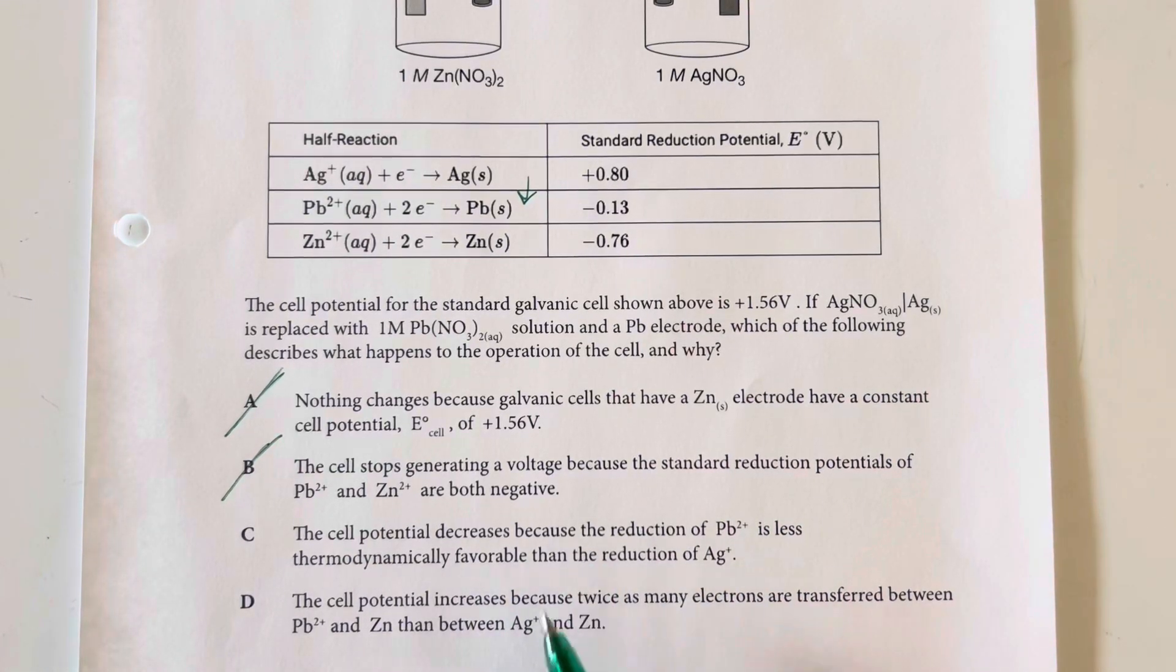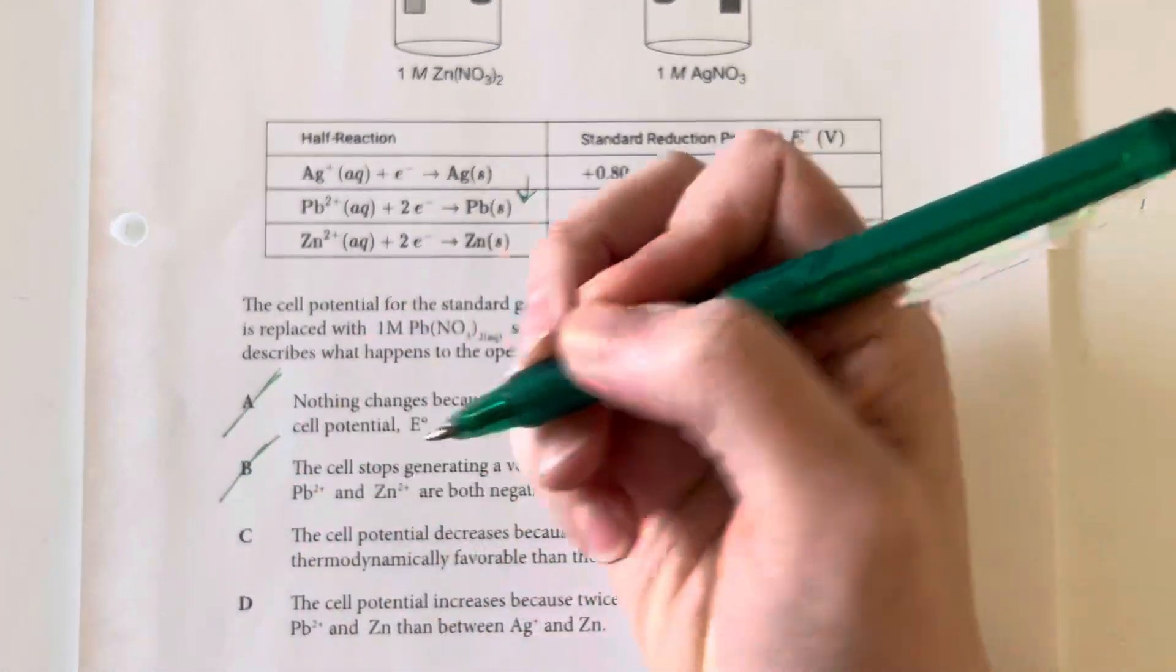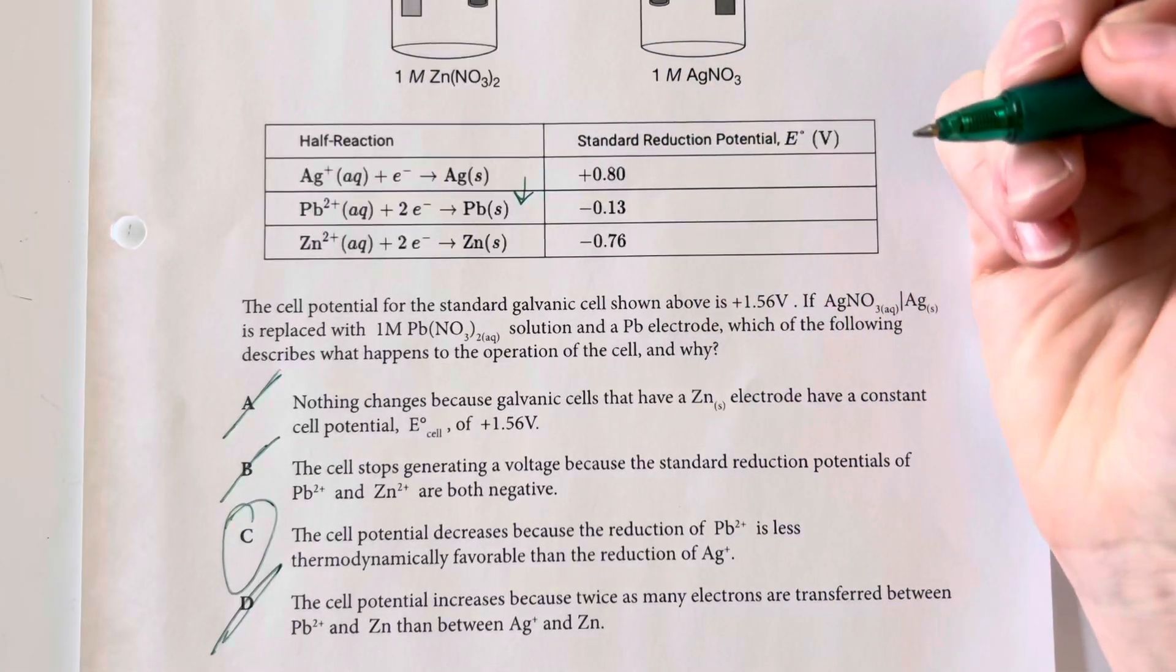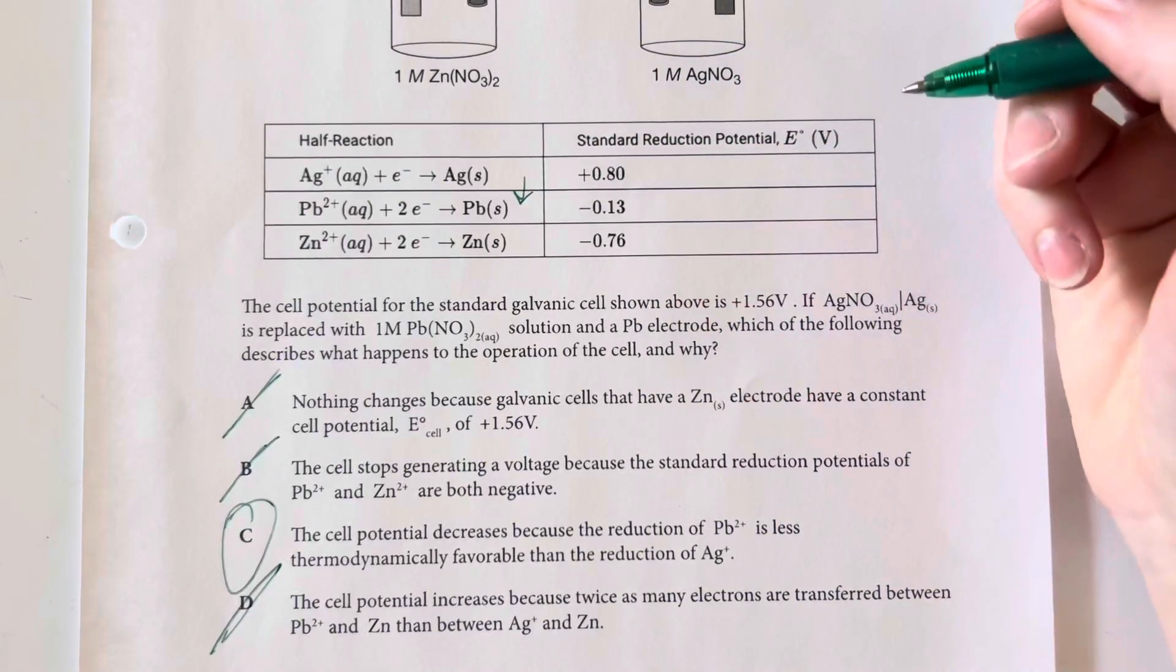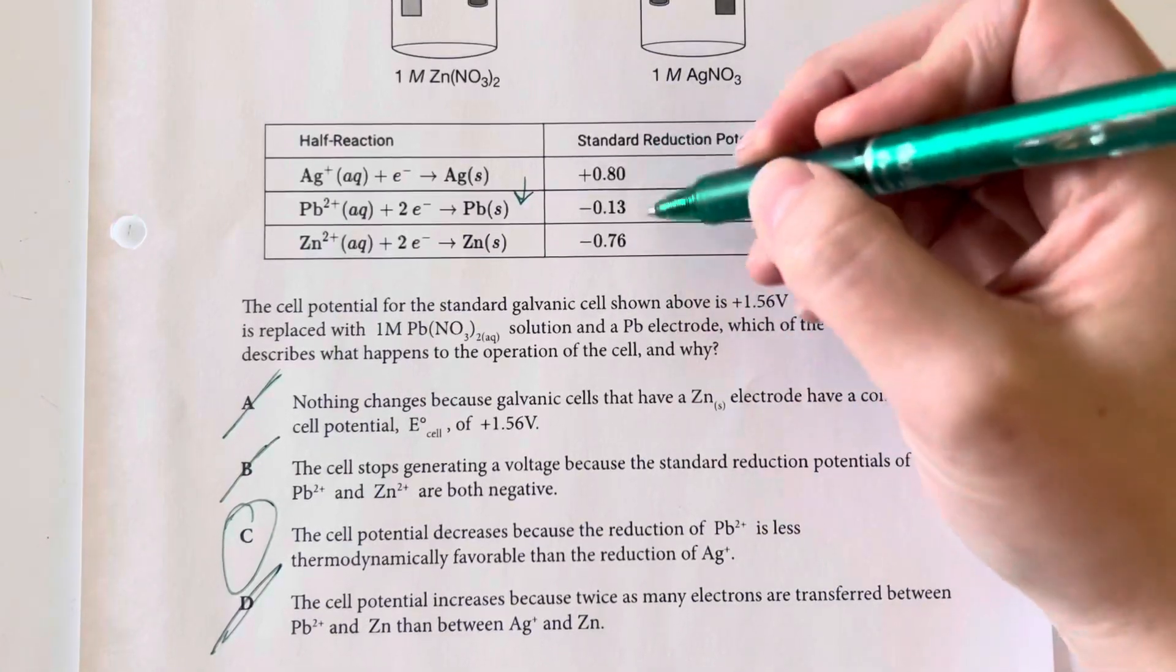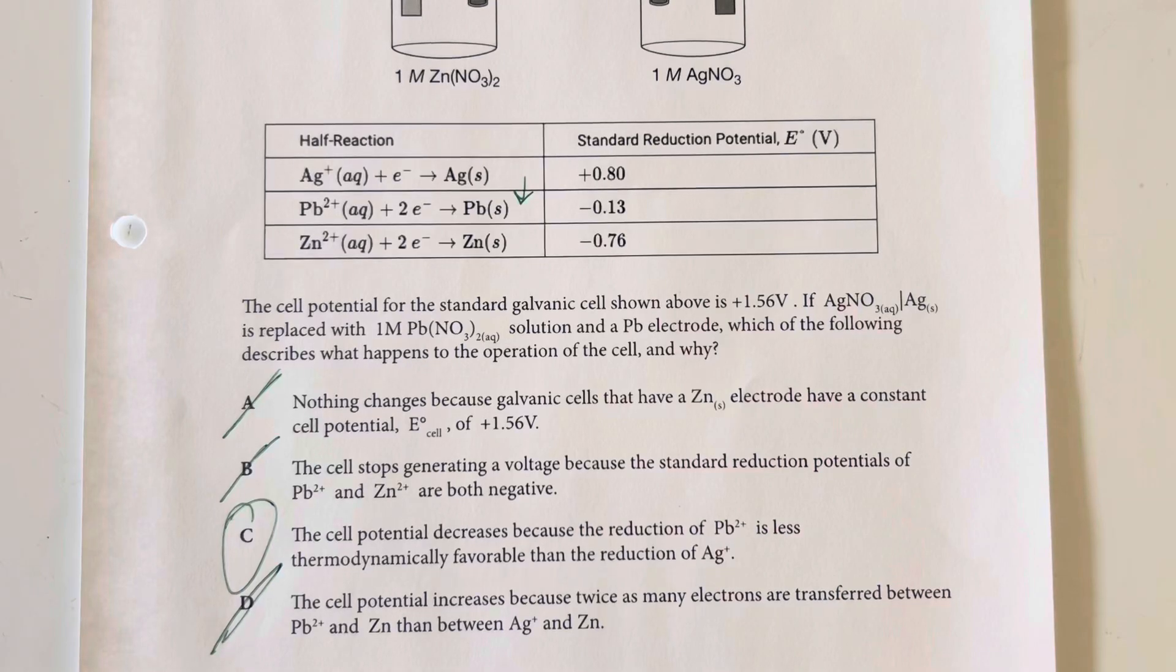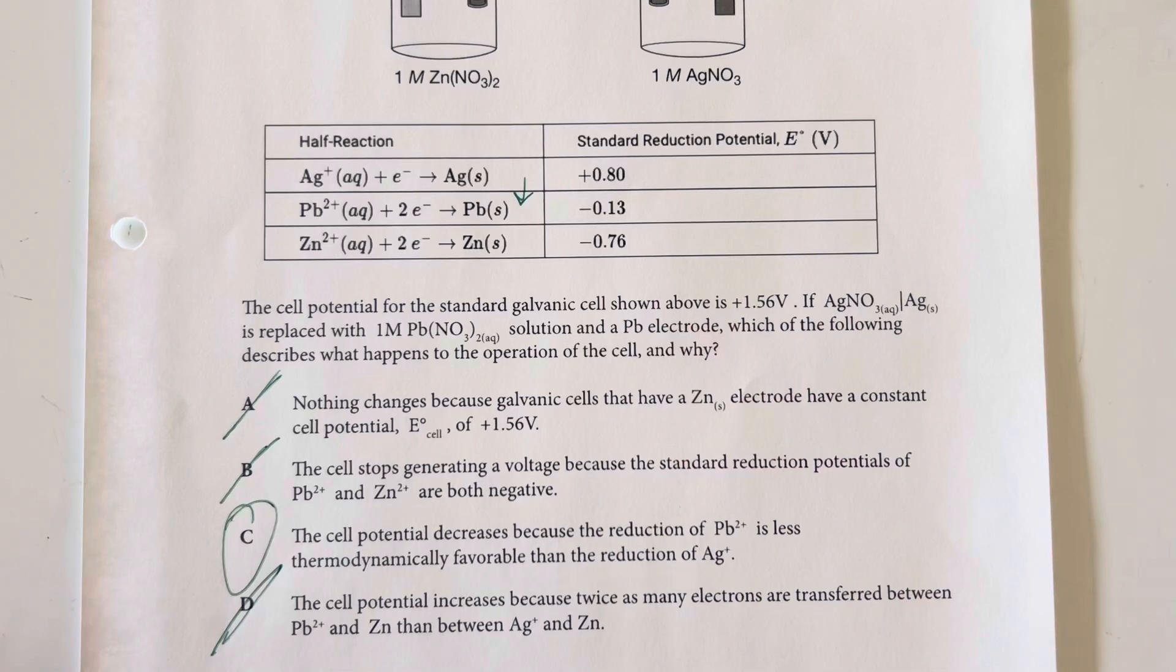The question asks whether it increases or decreases. It will be decreasing because we've gone from a +0.8 standard reduction potential (E°) to a negative E°, so we are decreasing our overall cell potential.